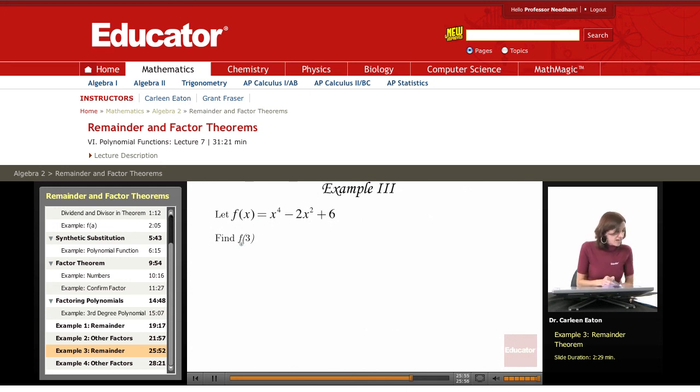Here we're given a function and we're asked to find f of 3 using the remainder theorem, which states that f of 3 will be the remainder when I divide this polynomial here. If I divide this by x minus 3,